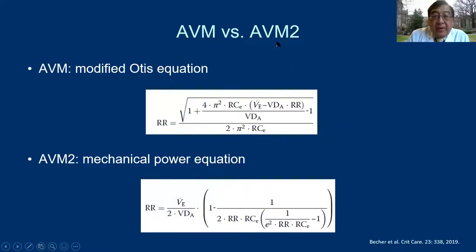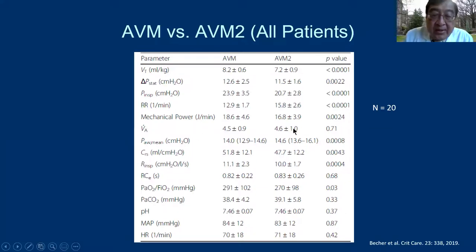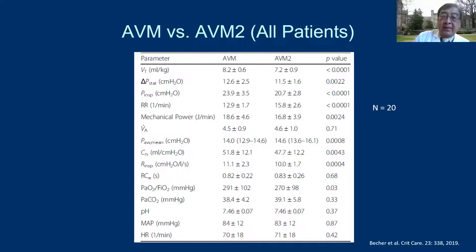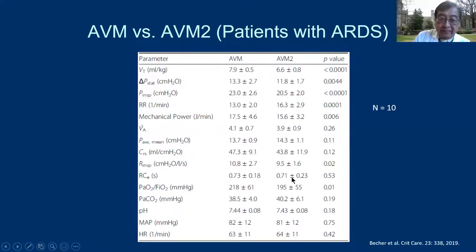One study compared AVM and AVM2 — AVM2 is in the current ventilator, while AVM is the older one, similar to the Otis equation with slight modification. Comparing the two: AVM2, using the mechanical power equation, has lower tidal volume and higher respiratory rate, as expected. Respiratory pressure is lower because less pressure is needed to deliver the smaller tidal volume. In the same minute ventilation, the recommendation is slightly different — breathing power may give a slightly higher tidal volume than mechanical power. The ABG results (PF ratio ~270-290) are about the same.